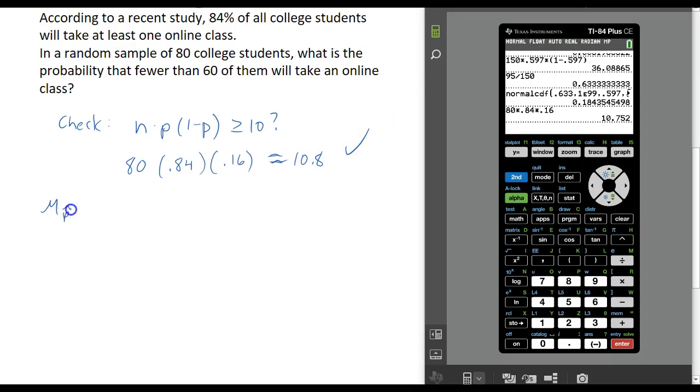The mean for this sampling distribution is going to be the population proportion, which is 84%. The standard deviation is going to be the square root of p times 1 minus p over n, which in this case would be the square root of 84% times 16% divided by 80. We want to find the probability that my sample proportion is fewer than 60 out of 80.